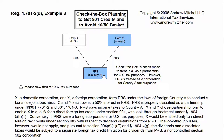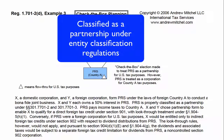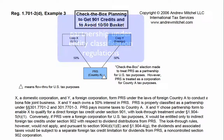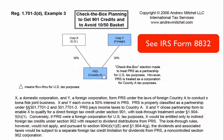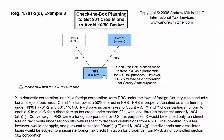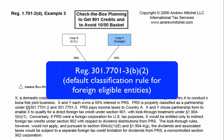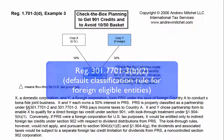The example states that PRS is classified as a partnership for U.S. tax purposes under the Entity Classification Regulations. Note that it is often necessary to make an affirmative entity classification election, also known as a check-the-box election, to treat foreign entities as partnerships. If all of the owners of a foreign entity have limited liability, the entity defaults to be treated as a corporation for U.S. tax purposes.